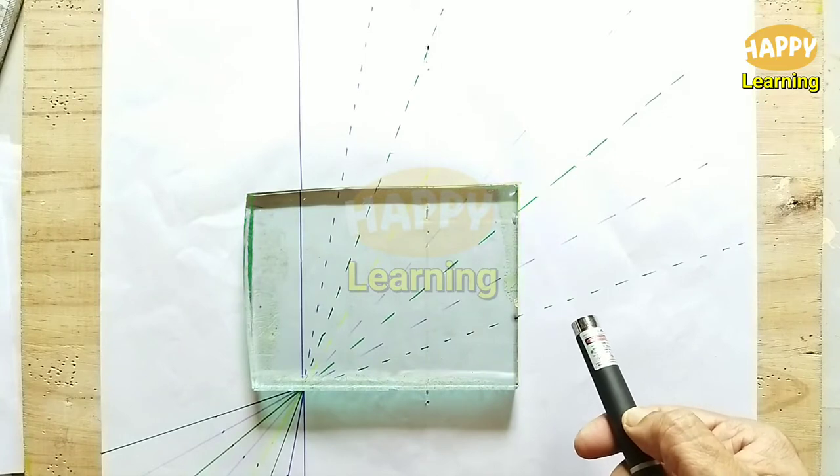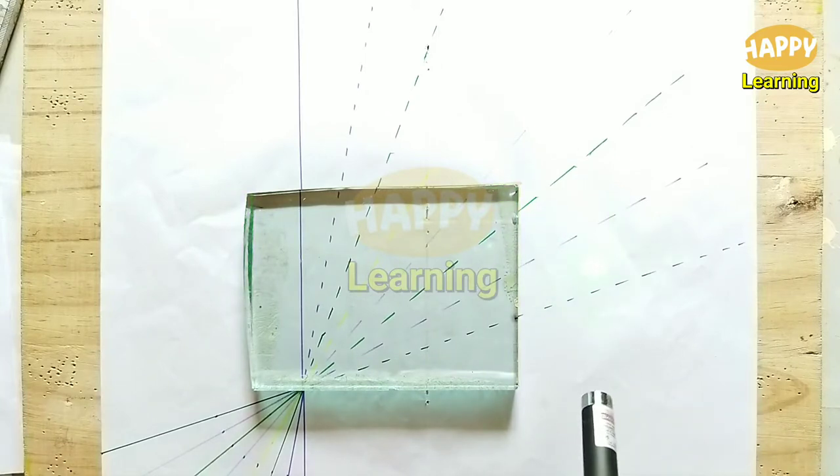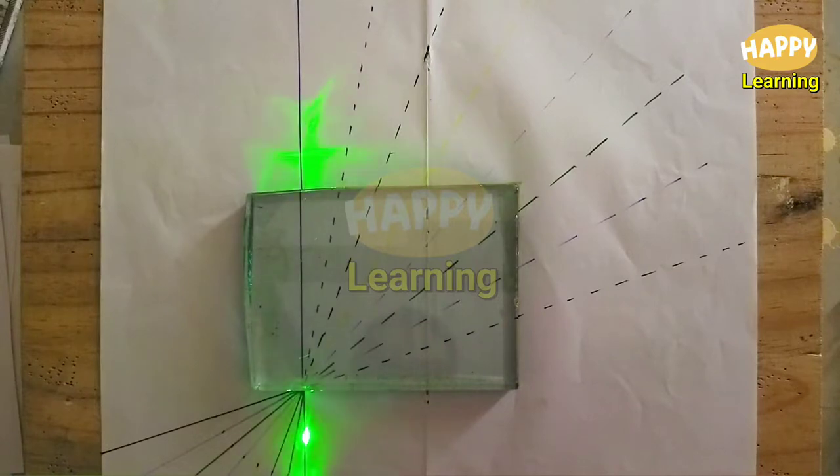Now use a laser pen. Here I am using a green color one. When the light ray is passed along the normal, there will be no deviation.